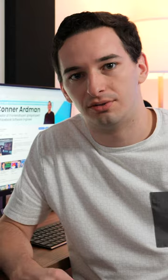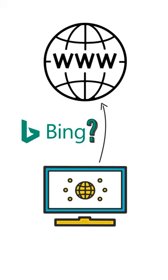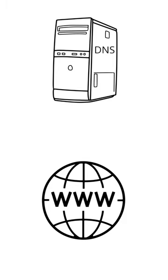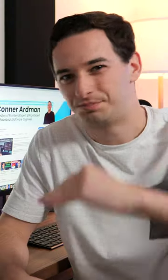But now let's say you're looking for a website you've definitely never been to before, say bing.com. Well, in this case, your computer is going to make a request to the internet service provider asking where the Bing servers are. And if your ISP doesn't know, it's going to make a request to the DNS server, which is basically just a giant spreadsheet that maps domain names to their IP addresses.